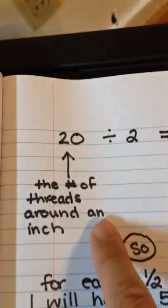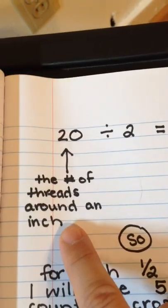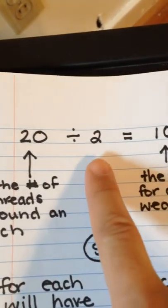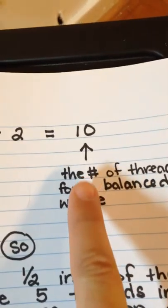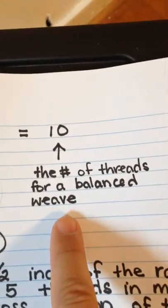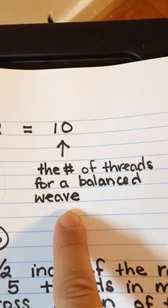So that means I have 20 threads which is wrapped around one inch. I'm going to divide that by two, which is going to give me 10, which is the number of threads I'm going to use for a balanced weave.